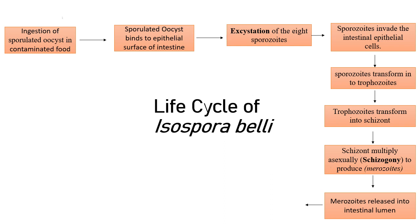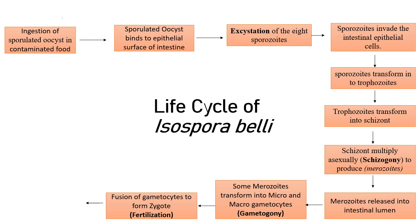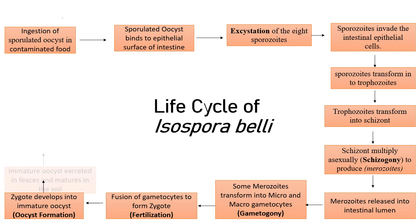Upon release, some of the merozoites transform into micro and macro gametocytes, or male and female gametocytes — a process known as gametogony. The male and female gametocytes fuse via fertilization to form a gamete and then a zygote. That zygote will secrete a cyst wall and an immature oocyst will be formed.